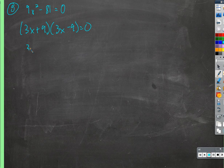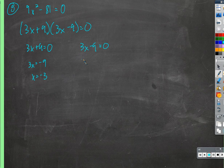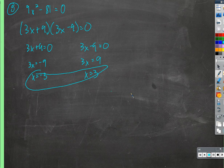We could set each of these factors equal to 0. So 3x would equal negative 9, and x would equal negative 3 when we divide by 3 on both sides. Same here, except for an opposite sign, and x would be 3. So we can solve it that way.